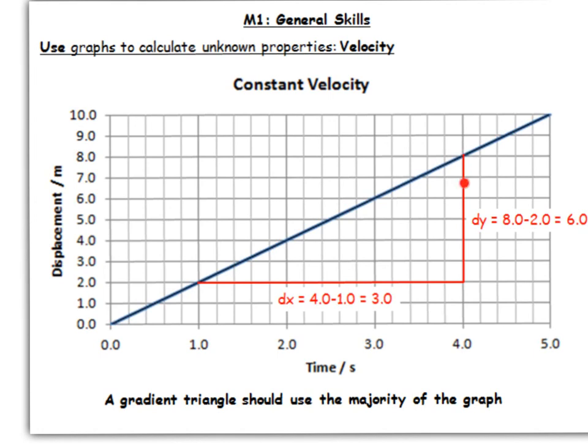So what I've done here, we've got a triangle drawn on here. We've calculated the change in y, so we've got 8 minus 2, so it gives you 6. And we've got our change in x, so we've got 4 minus 1 gives you 3.